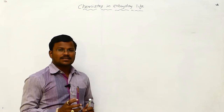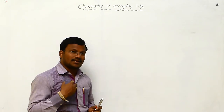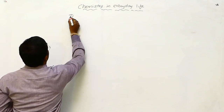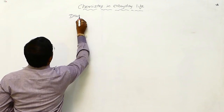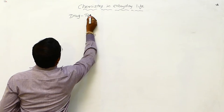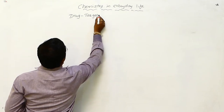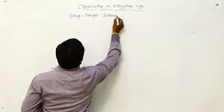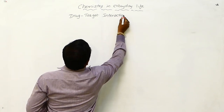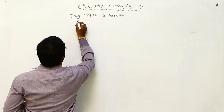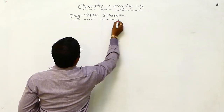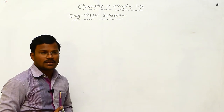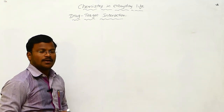The drugs will have some targets in the living organism or human beings. Let us learn the next concept: drug-target interaction. Drug-target interaction gives us an idea of how drugs are going to target the macromolecules of the living organism body.